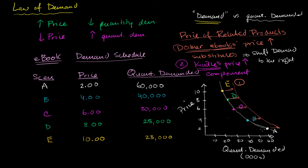If my book is $2, since fewer people are going to have Kindles — or maybe they've used some of their money to buy the Kindle and have less to buy my book — for any given price, it's going to lower the quantity demanded. So it essentially will shift the entire demand curve to the left — that is scenario two. And you can imagine the other way: if the Kindle's price went down, that would shift my demand curve to the right. If the price of substitutes went down, that would shift my entire curve to the left.